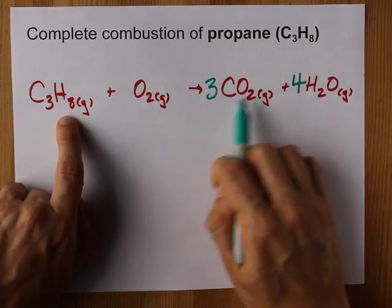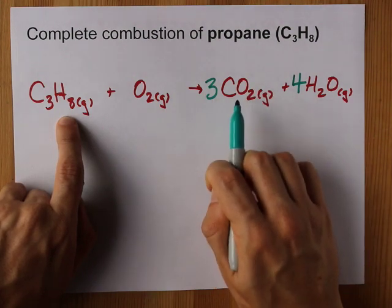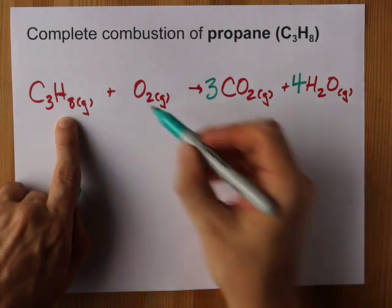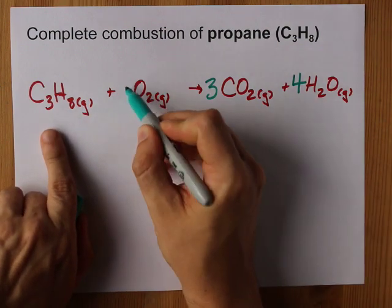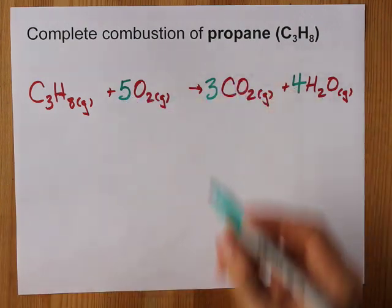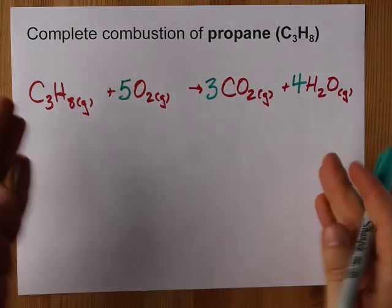Now how many oxygens do I have? I have three times two is six here, and four, which makes ten total. How many O2s would that be? Well, ten divided by two gives me five, so it's five O2s. Hey, that was a quick balancing and we're done.